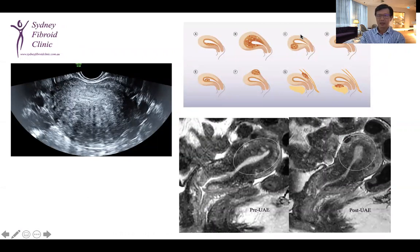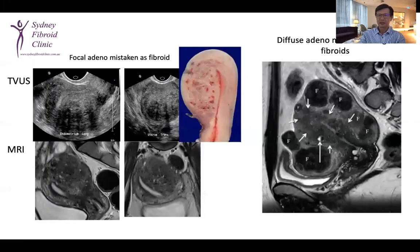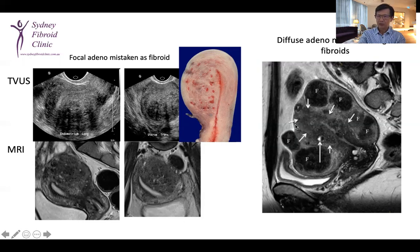Ultrasound typically shows an enlarged uterus with asymmetrical wall thickening and venetian-blind artifact. MRI can potentially demonstrate the T2 hyperintense ectopic endometrial tissue, as well as associated myometrial hyperplasia seen as a thickened junctional zone. Ultrasound can sometimes mistake focal adenomyosis for fibroids, whereas on MRI we can clearly see it is an infiltrative lesion. In the presence of fibroids, ultrasound can be quite challenging in detecting these subtle adenomyotic changes, but they are clearly demonstrated on MRI.